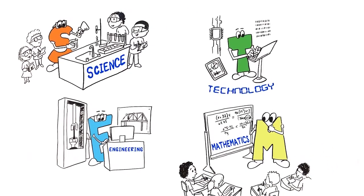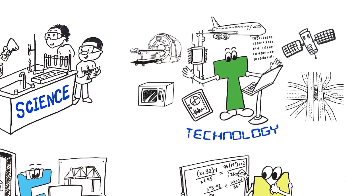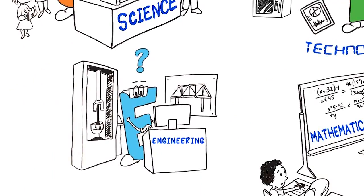Comparatively little attention has been paid to the T, the products and systems that meet human needs, and E, the creative process used to design these things.